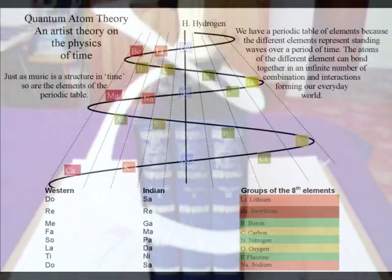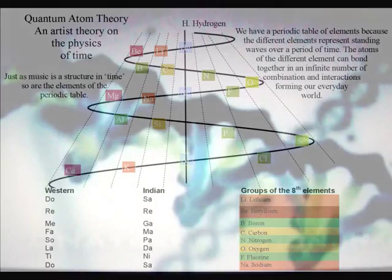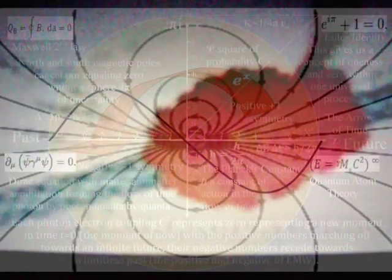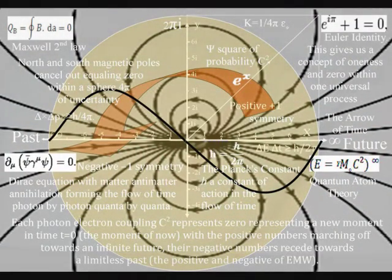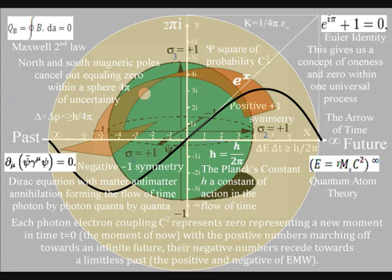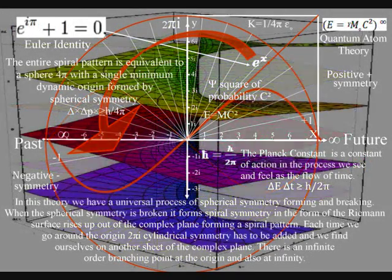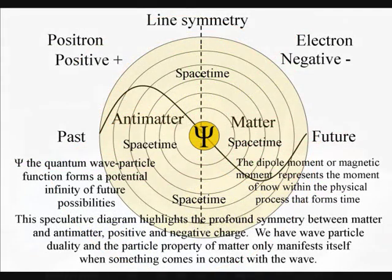Each wave forms a period, with elements that have similar properties having a similar position within each wave. The different elements represent standing waves over a period of time. The atoms of the different elements can bond together in an infinite number of combinations and interactions, forming our everyday world. This is not a static process but a dynamic one, with light waves of electromagnetic radiation continuously interacting with the atoms, with the future coming into existence with each new photon-electron coupling. Matter, in the form of electron waves of probability, is being created into particles when a light wave comes in contact with them, forming a photon-electron coupling. This represents the moment of now in that reference frame, with time symmetry between matter and antimatter, with the antimatter representing the past.